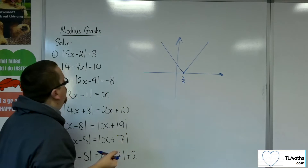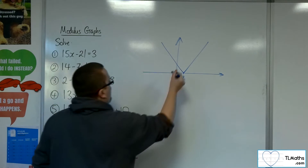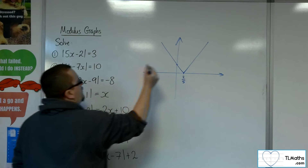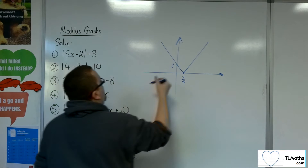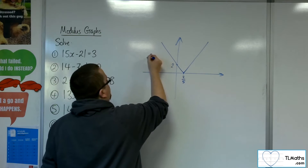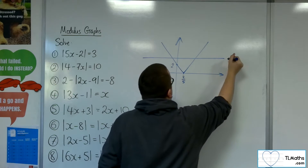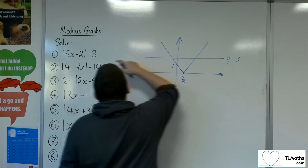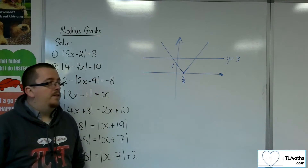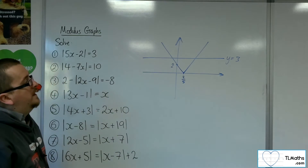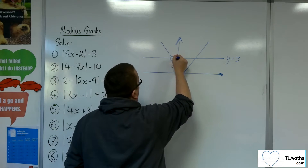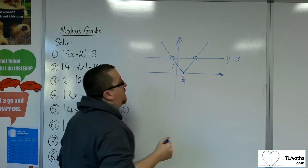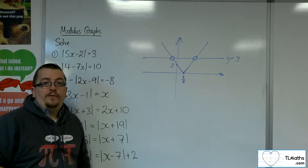When x is 0, you're going to get mod of minus 2, so that's going to be 2 on the y-axis. And then you've got y equals 3, representing the right-hand side of the equation. You can see that the line and the modulus graph will intersect at two points.